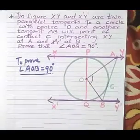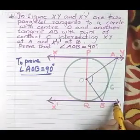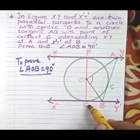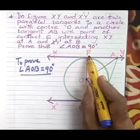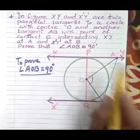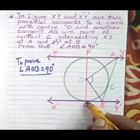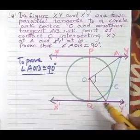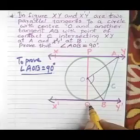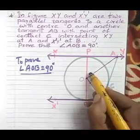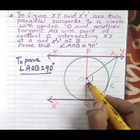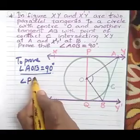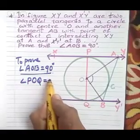Now, since these two tangent lines xy and x-dash y-dash are parallel, what we can say about the line PQ — OP is a radius at the point of contact, OQ also a radius at the point of contact. These two lines are parallel, which means POQ is a diameter. So angle POQ equals 180 degrees because it is a straight line — it is a diameter.